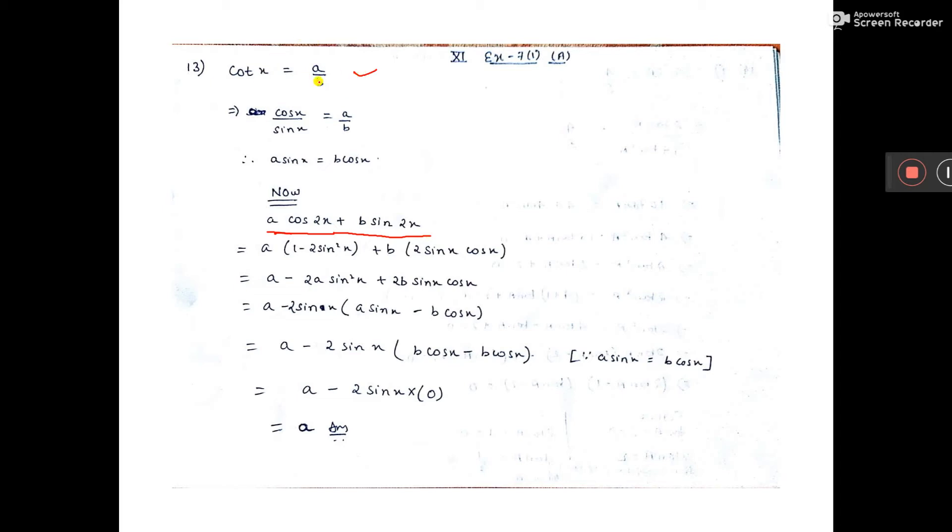See here cot x given. We can write cot means cos by sin. Then you cross multiply: a sin x equal to b cos x, and keep this as equation number 1.